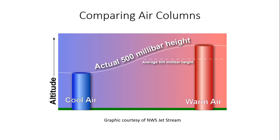Here is an example comparing a cool air column versus a warm air column and the actual 500-millibar height. I'll get into the 500-millibar level later in future training when we talk about weather charts. In general, 500 millibars equates to an average of 18,000 feet above the ground. You'll notice a shorter air column with cooler air as compared to warmer air. The cool air column on the left represents polar areas; the warm air column on the right represents equatorial areas. This graphic is courtesy of National Weather Service Jetstream.